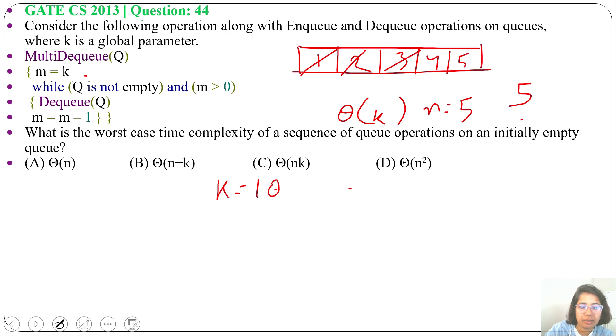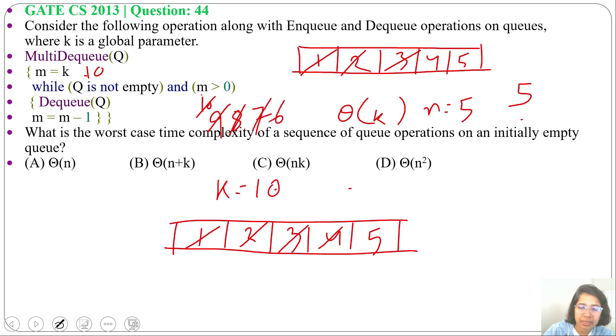Suppose K equals 10 and we inserted 5 elements in a queue: 1, 2, 3, 4, 5. Now after 5 enqueues, we are running 1 multi-dequeue, so M will be 10. While Q is not empty, 10 is greater than 0, it will be dequeue, then M will be M minus 1, now it will be 9. Then again Q is not empty, M is greater than 0, it will be dequeue, M will be 8. Again dequeue, M will be 7. Again dequeue, M will be 6. Again dequeue, M will be 5. Now Q is empty, so we will exit from the loop.